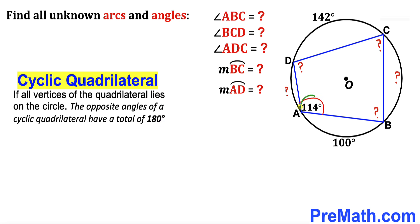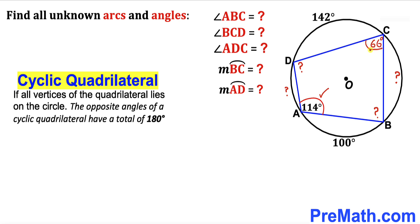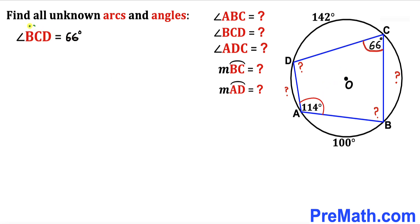The sum of two opposite angles must equal 180 degrees. Since angle BAD is 114 degrees, the opposite angle BCD has to be 66 degrees, because 114 plus 66 equals 180 degrees. So angle BCD turns out to be 66 degrees.